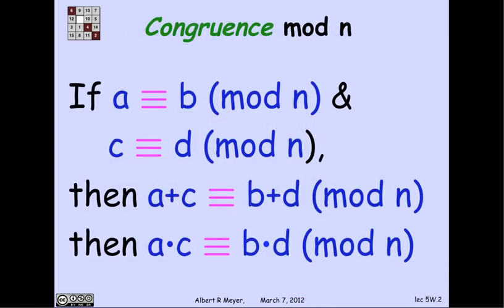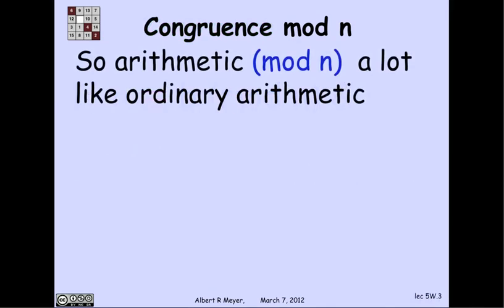So first of all, we've already observed that we have these basic congruence rules, that if a and b are congruent and c and d are congruent, then a plus c and b plus d are congruent, a times c and b times d are congruent. So that's the sense in which arithmetic mod n is a lot like ordinary arithmetic.